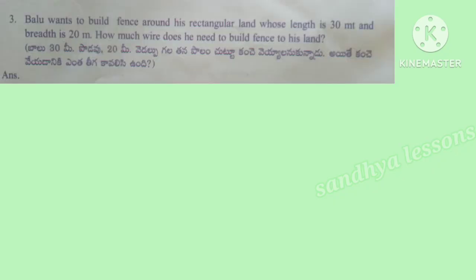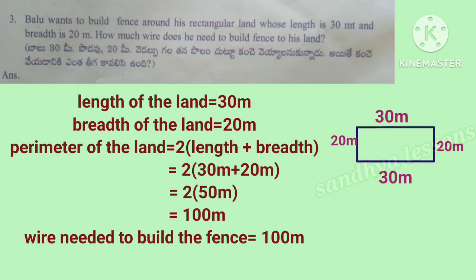Third problem: Balu wants to build a fence around his rectangular land whose length is 30 meters and breadth is 20 meters. How much wire does he need? Length equals 30 meters, breadth equals 20 meters. Perimeter equals 2 into (30 plus 20) meters, which equals 2 into 50 meters, equals 100 meters. Wire needed to build the fence is 100 meters.